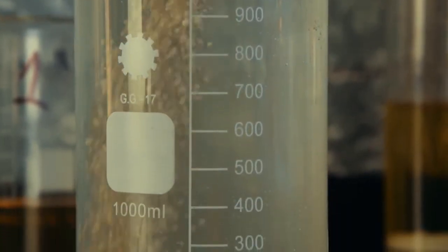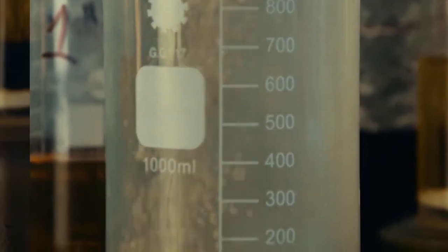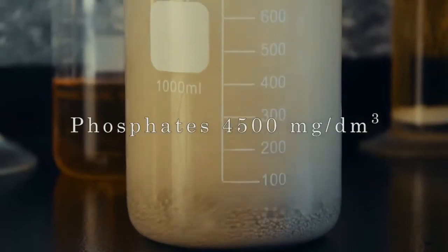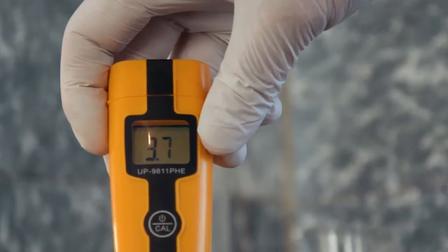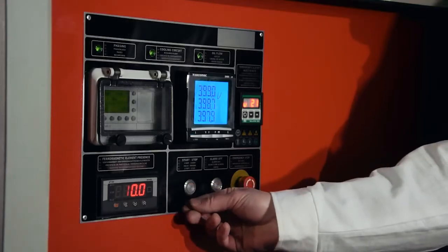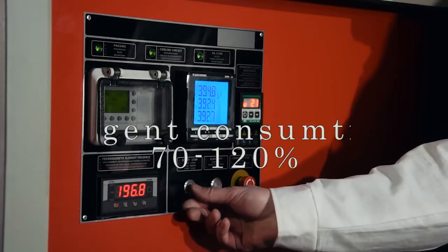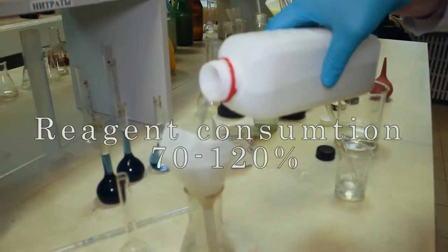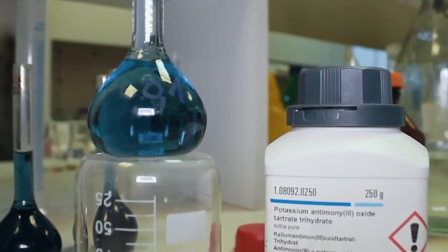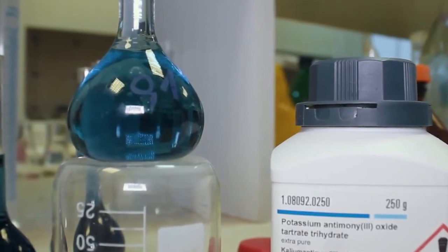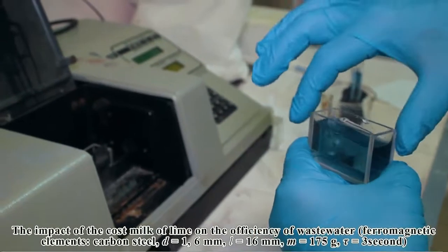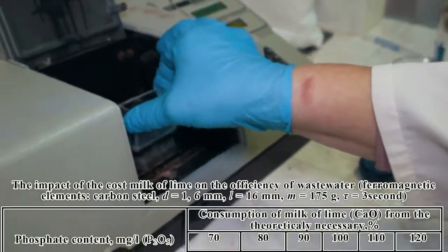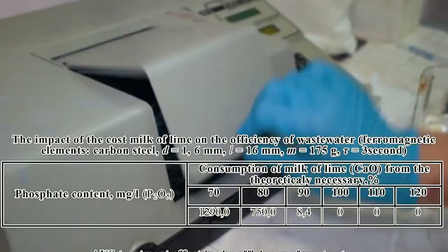The substance used for the research was industrial wastewater with 4500 mg per liter phosphate concentration, pH of 4.0, 10% lime milk processed for 1 to 3 seconds in the mill, reagent consumption of 70 to 120% of stoichiometric, pH of the wastewater during processing in the range of 4.0 to 12.0. The content of phosphate in wastewater was determined by phosphate photocolorimetric method.